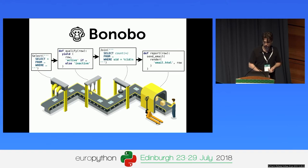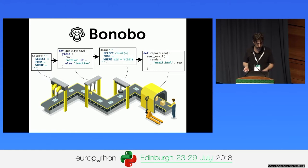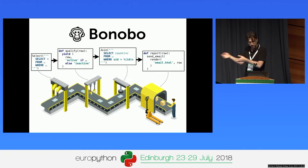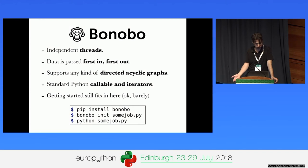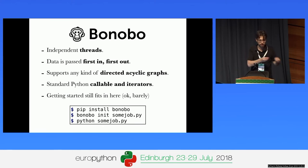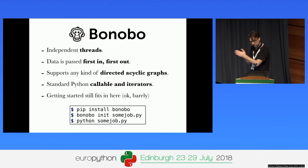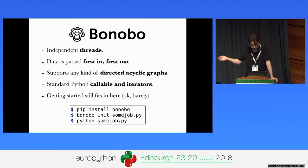You use callables, iterators, and class instances to get data — here we're selecting from a database, qualifying it, joining to another database, and sending emails. The send email function will run while the select function is still yielding results, so the first report will be sent while select still has rows to yield. It runs in independent threads, first-in-first-out. It supports any directed acyclic graph, it's standard Python, and getting started is just three lines.